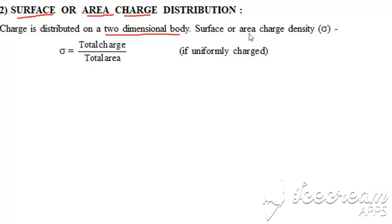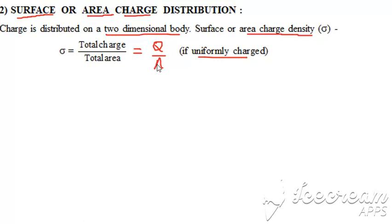For this type of charge distribution, we define surface charge density or aerial charge density, denoted by sigma (σ). In the case of uniform charge distribution, sigma equals total charge divided by total area. If total charge is Q and area is A, we divide Q by A to find the charge density.